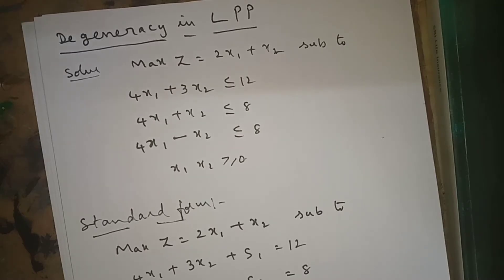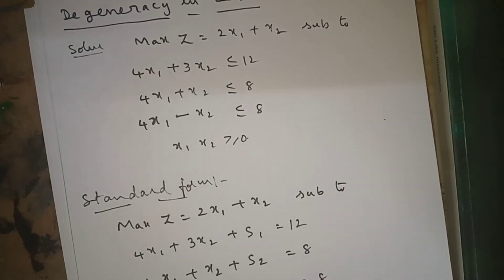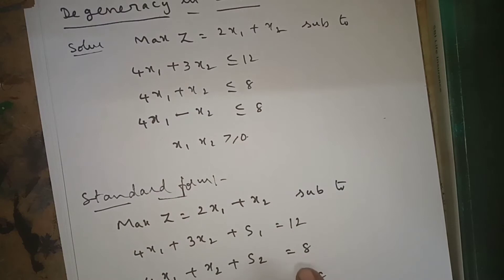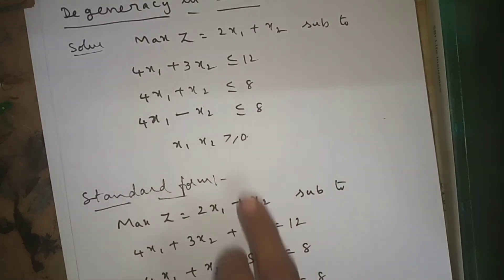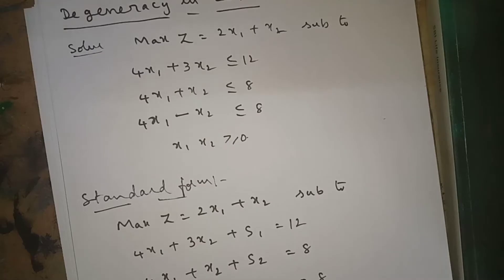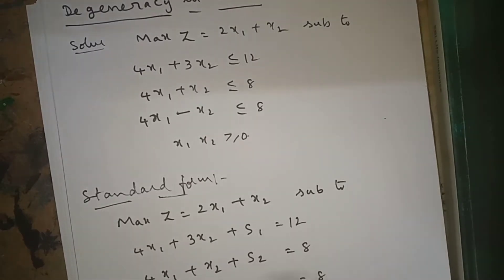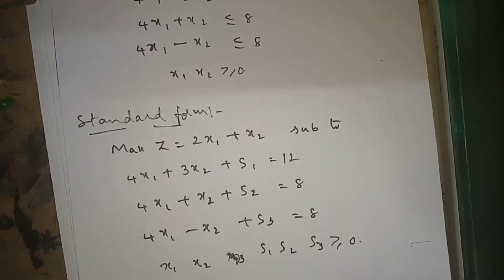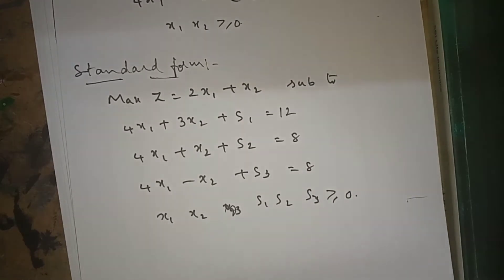We will convert this into the standard form because we are solving this problem using the simplex method. Max Z is equal to 2x1 plus x2. The first constraint has a less-than-or-equal-to symbol, so we add s1, giving equals 12. The second also gives plus s2 equals 8. The third gives plus s3 equals 8. I added three slack variables s1, s2, s3. All variables x1, x2, s1, s2, s3 are greater than or equal to 0.